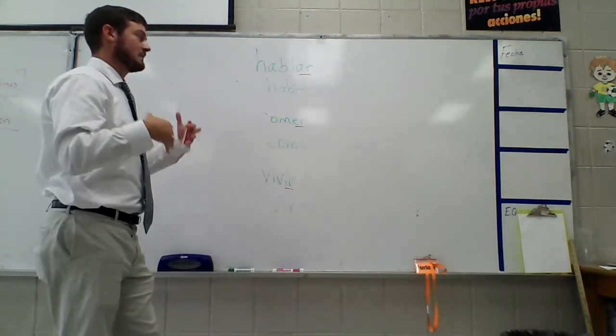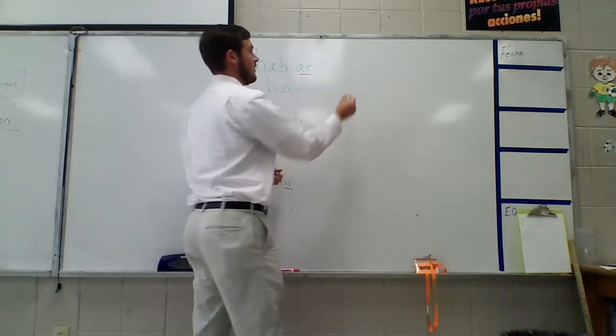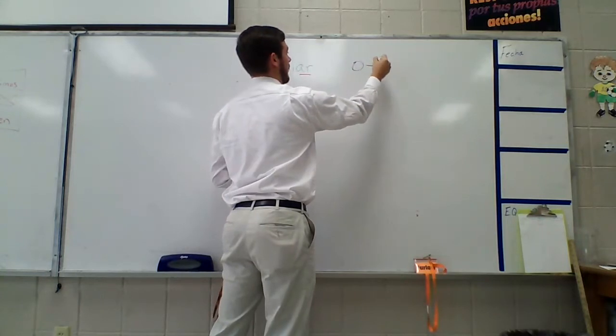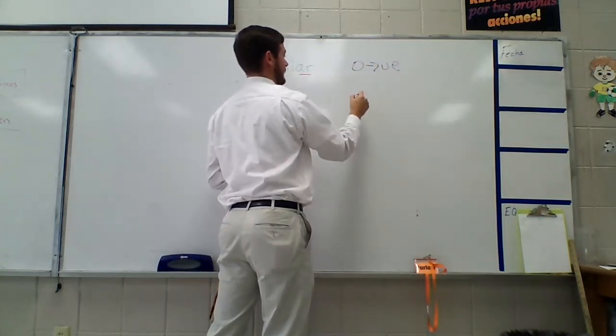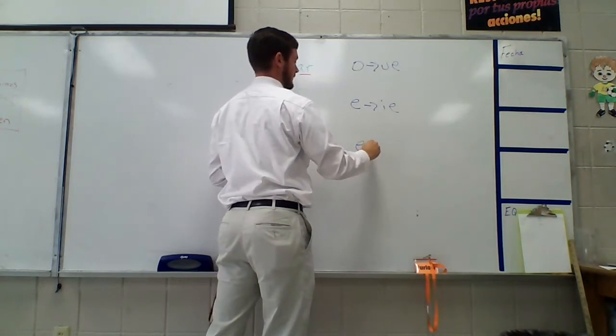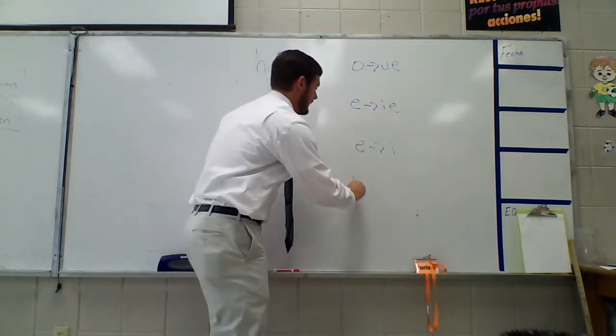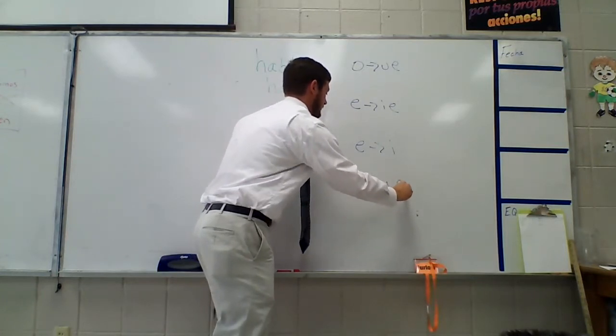Now, with stem-changing verbs, what happens is they change. And there are four types. The four types are O-T-U-E, E-T-I-E, E-T-I-E, and there's like only one of these and it is U-T-U-E.